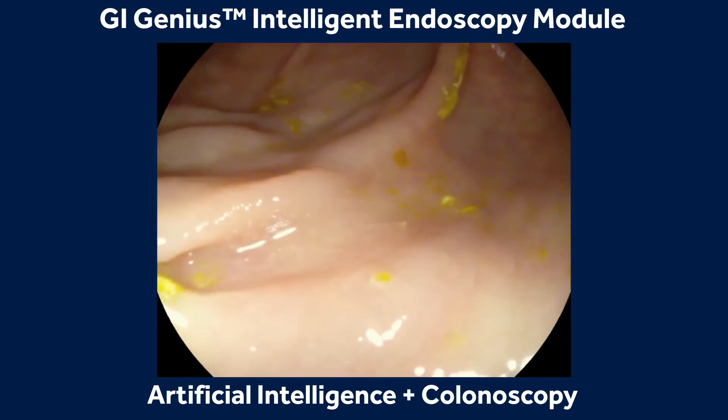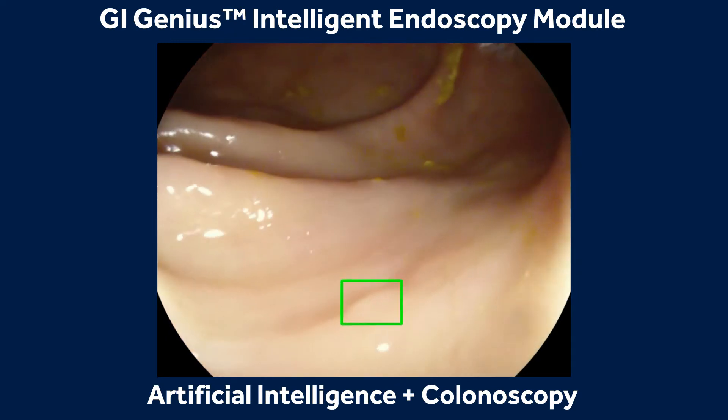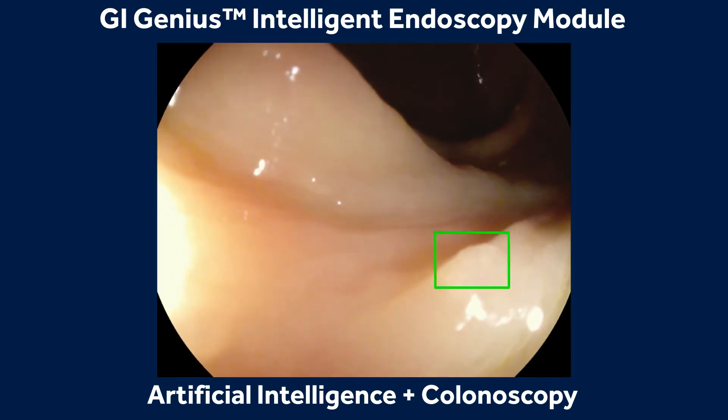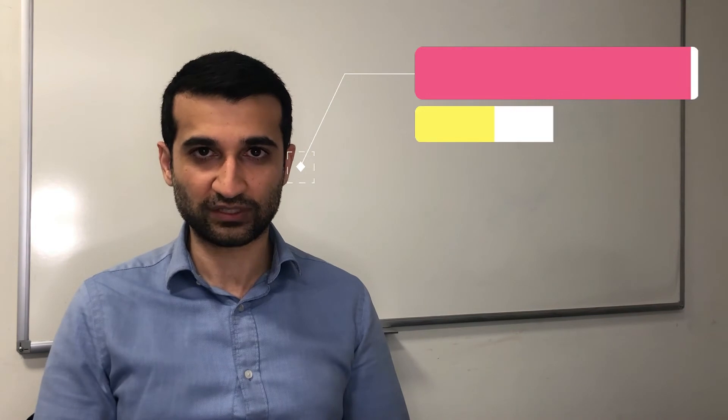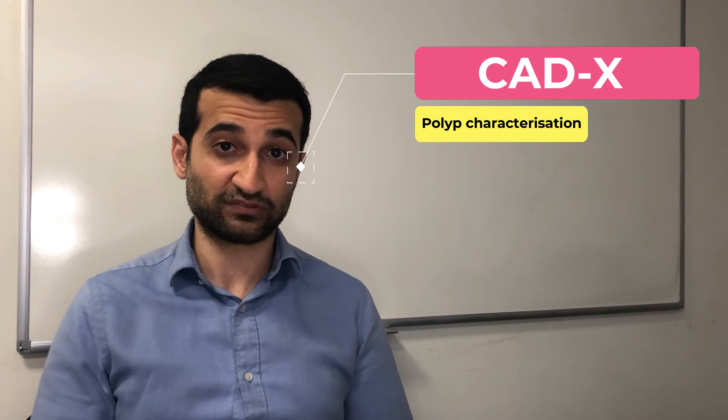So where are we now in terms of AI in colonoscopy? There are multiple devices approved in Europe ready for use, and it's important to get familiarity with some of the terms that are used. There are two main uses for AI in colonoscopy: firstly, polyp detection — often abbreviated to computer aided detection or CAD-E — and secondly, polyp characterization — often abbreviated to computer aided diagnosis, also known as CAD-X. Some devices can perform both functions at once.